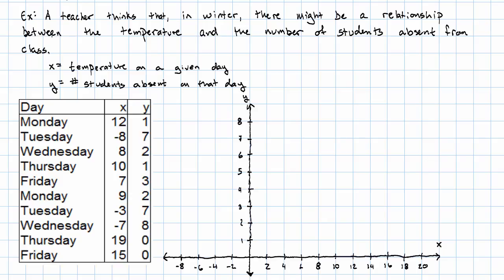So now we plot a point for each day. We have a day where the temperature is 12, and there was one absence. We have a day that the temperature was negative 8, and there were 7 absences. We have a day when the temperature was 8, and there were 2 absences. We have a day when the temperature was 10, and there was one absence.